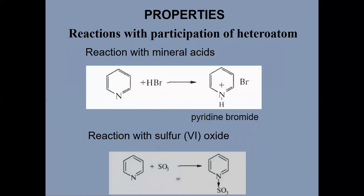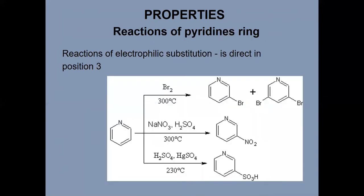Properties of pyridine — reactions with participation of the heteroatom. For example: reaction with mineral acids, reaction with sulfur oxide, reactions of pyridine N-oxide formation, and reactions of electrophilic substitution directed to position 3.